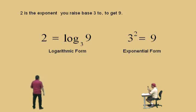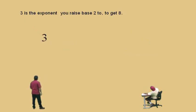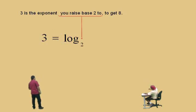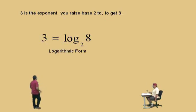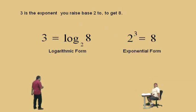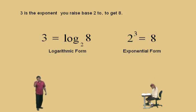Let's do another one, Charlie. Three — is your microphone in logarithmic form? Yeah. Okay. Is the exponent, you raise base two to, to get eight. Very nice, Charlie, and that's our logarithmic form. Okay, now put it back to exponential form. Go ahead and read it. Three is the exponent, you raise base two to, to get eight — and that is the exponential form. Notice, Charlie, is two raised to the third power eight? Yes, it is — because two times two times two is eight.